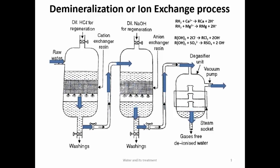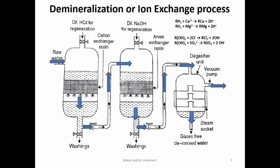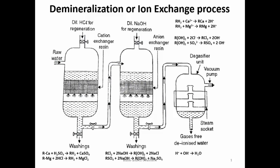After some time the resins get exhausted — all H⁺ and OH⁻ ions are replaced by Cl⁻, Ca²⁺, Mg²⁺ etc. For regeneration: dilute HCl and dilute NaOH are added from the top. For the cation exchange resin, Ca²⁺ and Mg²⁺ are replaced back by H⁺ from the acid, regenerating RH₂. For the anion exchange resin, Cl⁻ and SO₄²⁻ are replaced by OH⁻, regenerating ROH₂. Both resins are then ready to demineralize water again.